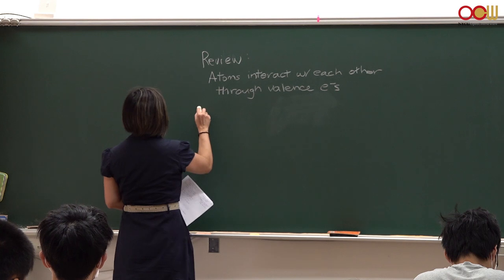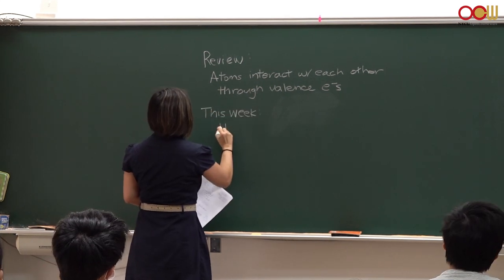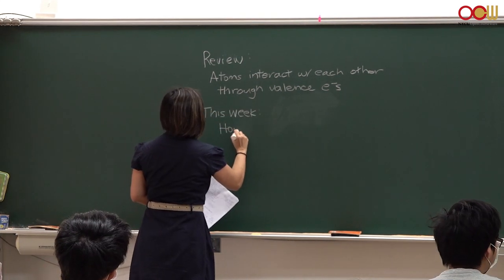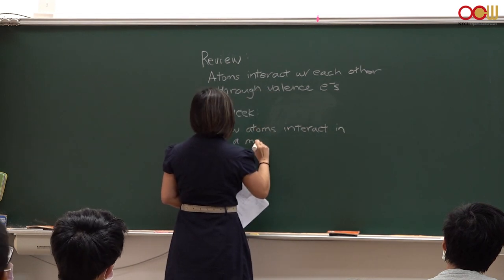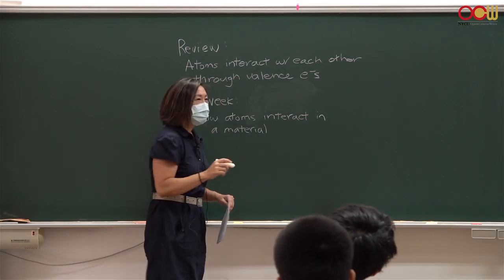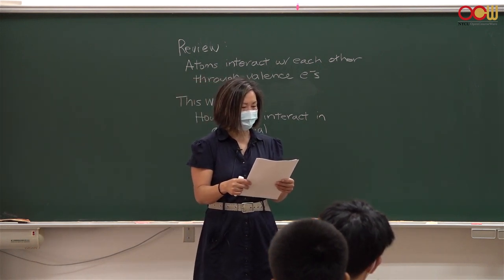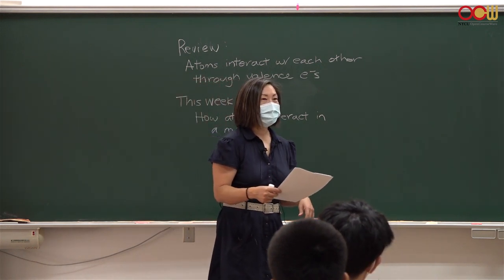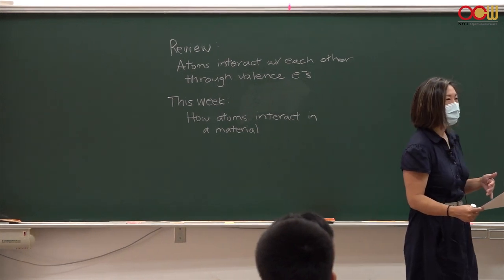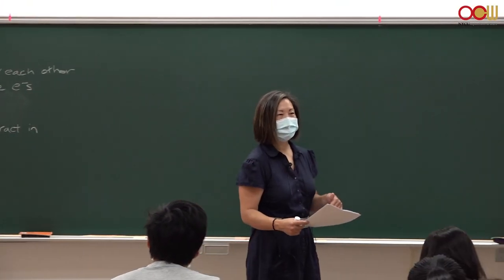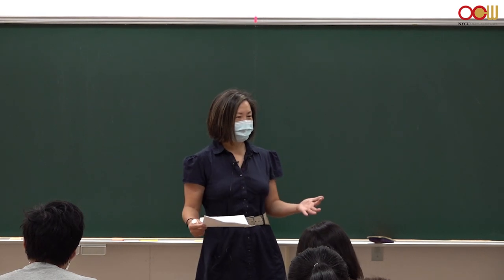We will talk about how atoms interact in a material. When we talked about bonding, it really is just two atoms next to one another. But what happens in a material, and how many atoms do you think are inside a typical thing that you might use?